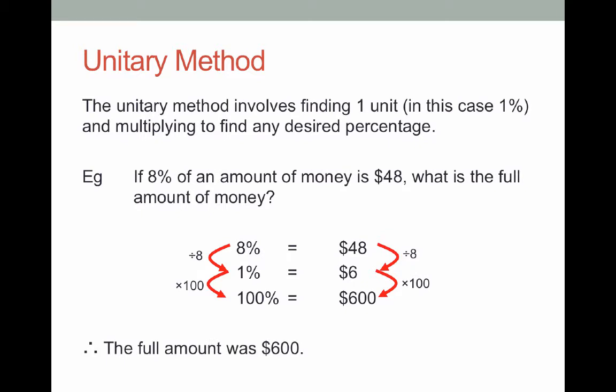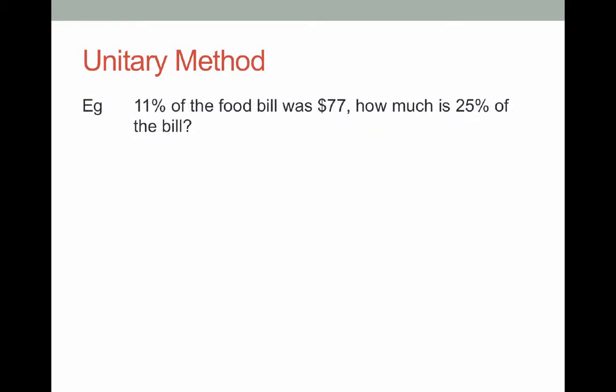We found 1% first and then we multiply that by 100 to get 100%. In this example we're told that 11% of a food bill was $77 and we want to know how much 25% of the bill would be. So we form an equation. We know that 11% is $77.